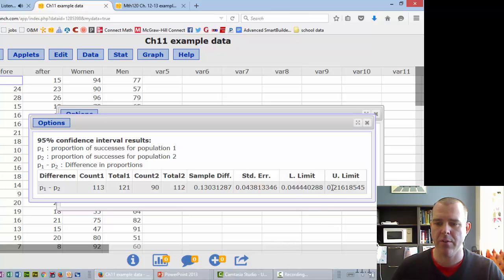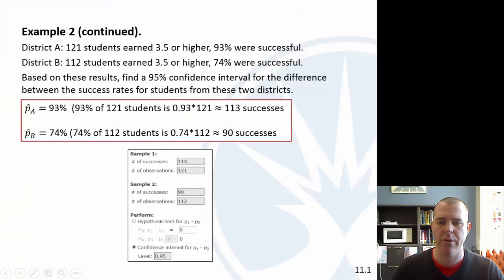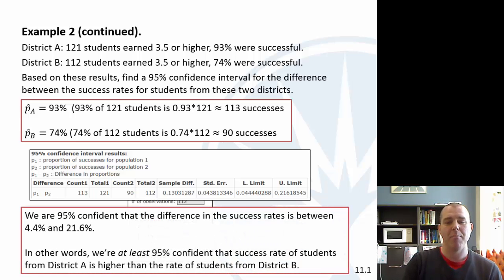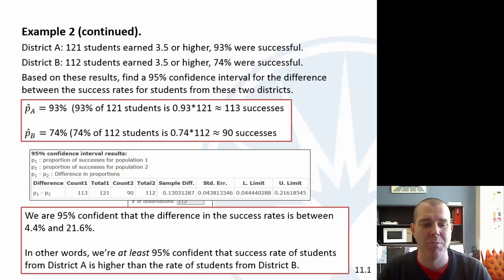If we go back over, there was the window that we did, and then there was our confidence interval. So we can be 95% confident that the difference is between about 4% and 22%. So in this case, that difference, we're 95% confident that that difference is between 4% and 22%. So we're pretty sure that the difference is positive.